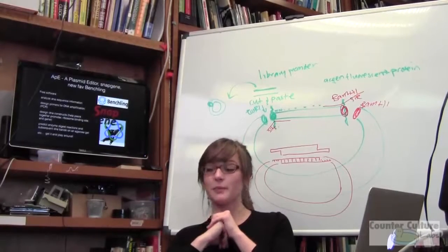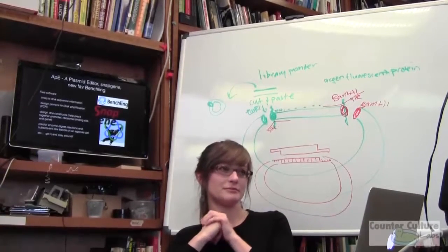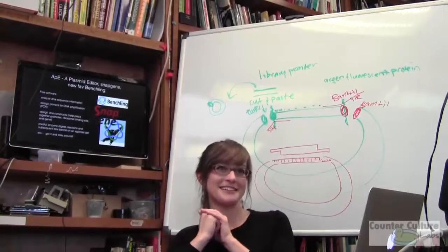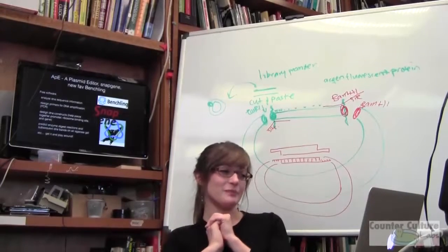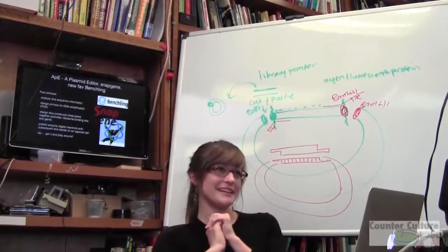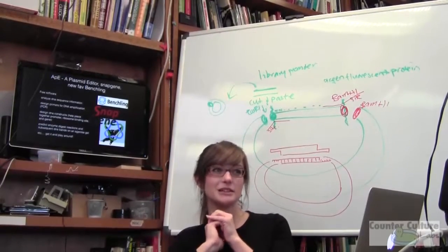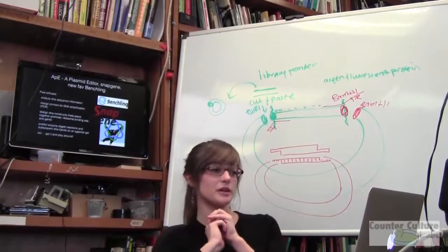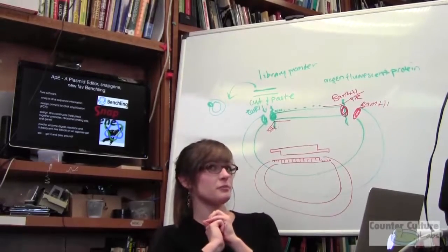Benchling lets you make shared oligo repositories so you don't end up spending more money than you need to by reordering similar primers. It's still in beta but they keep rolling out new updates. If you're a company you pay for the service, but if you're an individual or academic researcher, it's free.